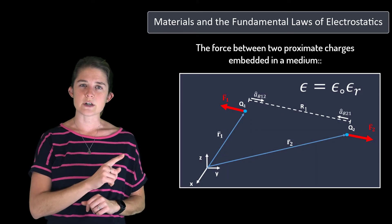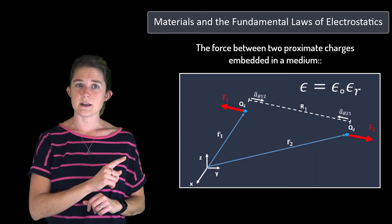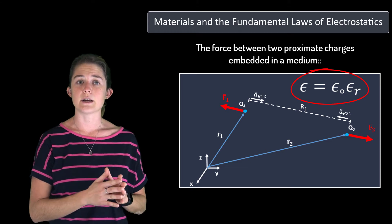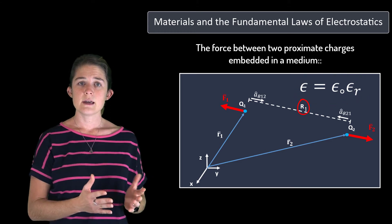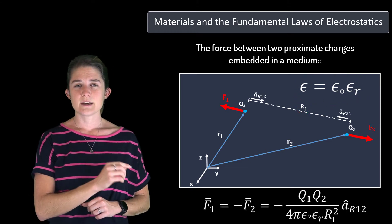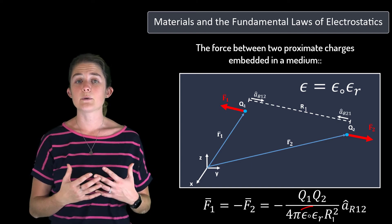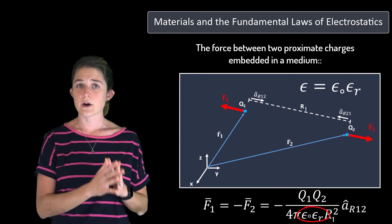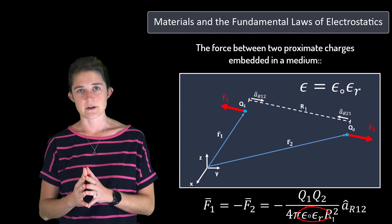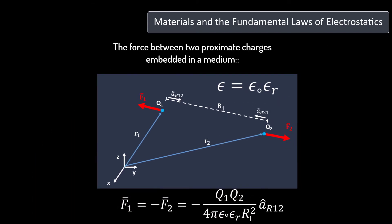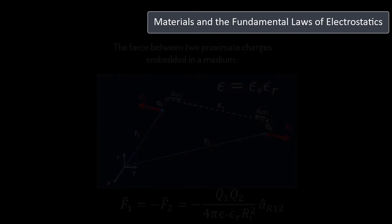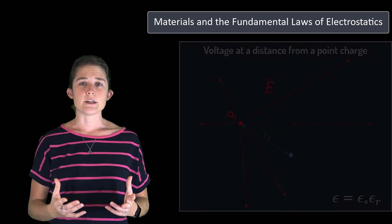For instance, the force between two charges embedded in a medium with relative permittivity epsilon_r and separated by a distance r1 is given by this equation. This is exactly the same equation we used in the free space course, except that we have changed epsilon-naught to the product of epsilon-naught and epsilon_r.